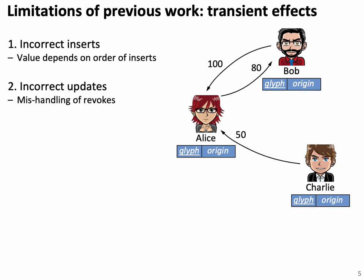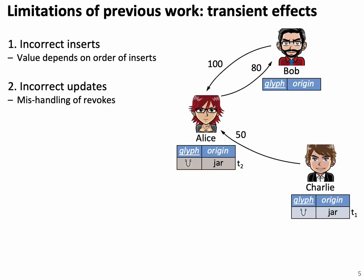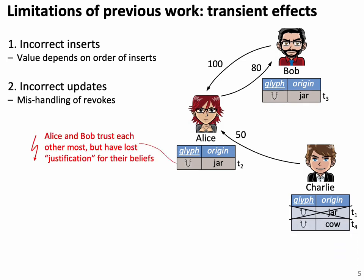What you observe is that the order of the inserts has an impact on the semantics, and we may not want that. Here's another example: Charlie imports a belief, Alice further imports this belief from Charlie and propagates it further to Bob. Then in the next time step Charlie says he made a mistake and wants to change it. Alice won't be able to update this because she trusts Bob more and Bob already has Charlie's original value in the system. She has lost the provenance connection of where the different beliefs come from. We want to avoid this.